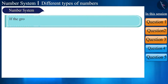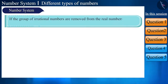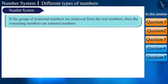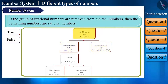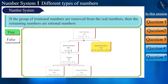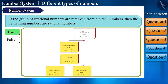If the group of irrational numbers is removed from the real numbers, then the remaining numbers are rational numbers. State whether this statement is true or false. Friends, a group consisting of rational numbers and irrational numbers is called real numbers. Hence, this statement is true: if the group of irrational numbers is removed from the real numbers, then the remaining numbers are rational numbers.